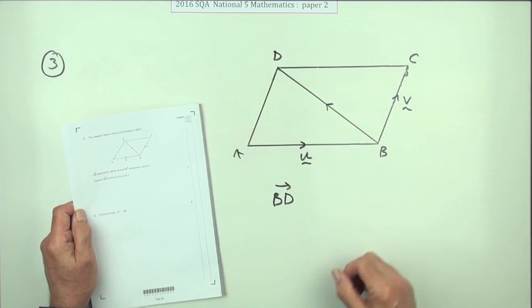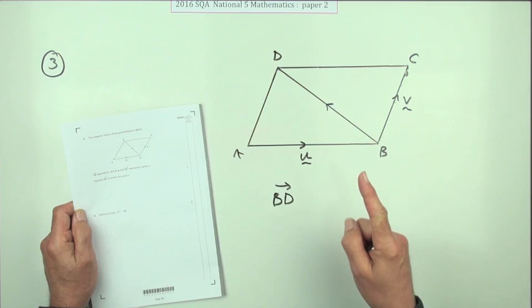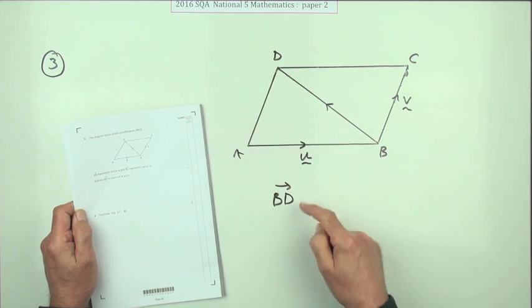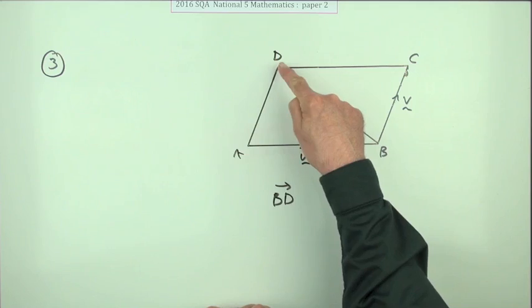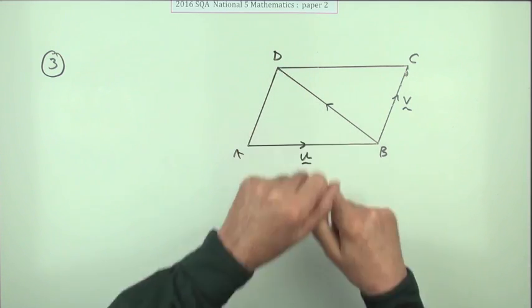They've got the same length, so they can be represented by the same vectors. Express BD in terms of u and v. Well, that simply means how do you get from B to D, but not traveling along that line.